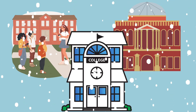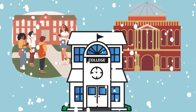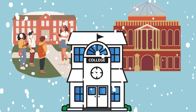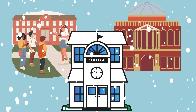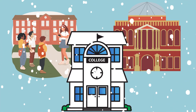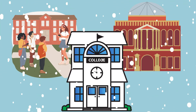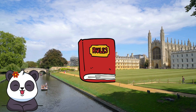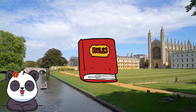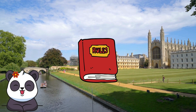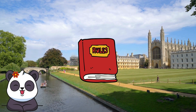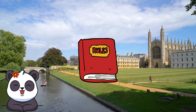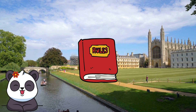Football was taken up as a winter game between residents' houses at public schools such as Winchester College, Charter House, and Eaton College. As early as 1843, they attempted to standardize and codify the rules of play at the University of Cambridge.